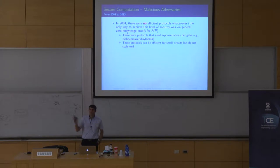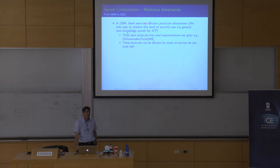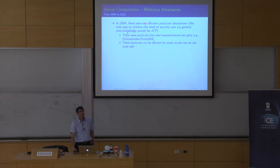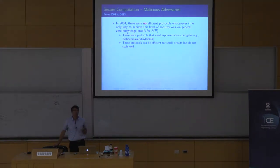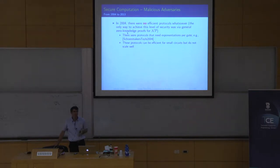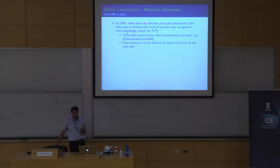In 2004 there were no efficient protocols whatsoever for doing this — less than ten years ago. The only way we knew how to achieve security in the presence of malicious adversaries was to run general zero-knowledge proofs using a reduction from the protocol specification to an NP-complete problem like Hamiltonicity or three-coloring. That's what we knew how to do, and there just wasn't any other way.